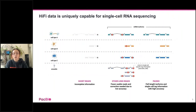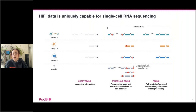HiFi data is uniquely capable for single-cell RNA sequencing. Compared to short reads, which only offer incomplete gene information, and compared to other long reads where there are fewer usable reads and error correction is often needed due to lower accuracy, with PacBio you can get full-length isoform information with high accuracy.